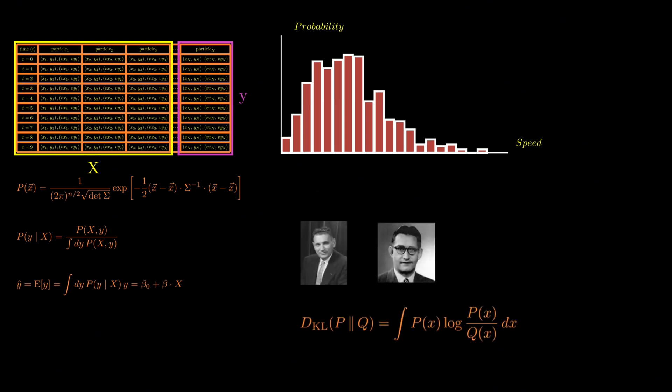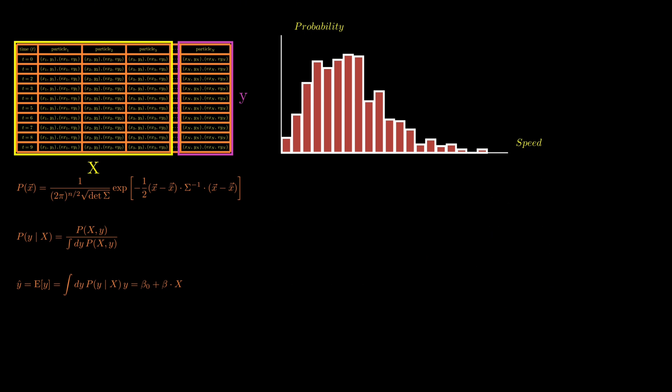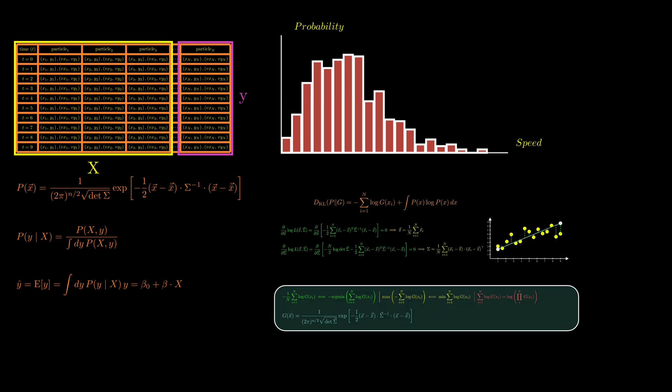Relative entropy, also known as the Kullback-Leibler divergence, quantifies the information loss when we approximate the true distribution of the data with our model. By minimizing this divergence, we found estimates for the mean and covariance matrix.